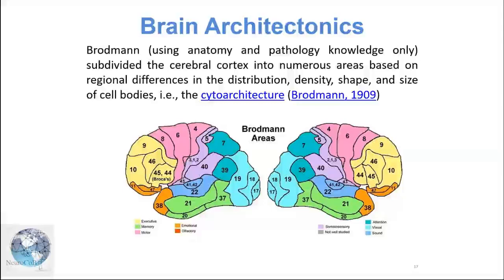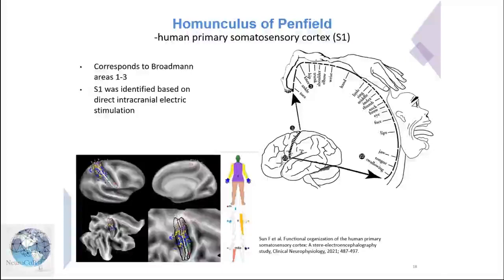Like Broadmann areas — this work was done on autopsy patients where researchers identified certain areas of the brain. Then there is the Homunculus of Penfield, developed using EEG to study the stimulation of motor and sensory function. They found that in the parietal sensorimotor cortex, there are areas representing different body parts. So there are various ways to classify brain lobes — anatomically, functionally, using various modalities.